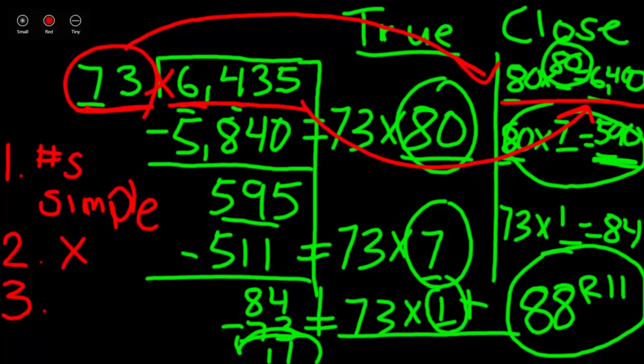Then, we made our problem true. 73 times 80. We made it true. Then, came back here with our answer for our last step and we subtract it.